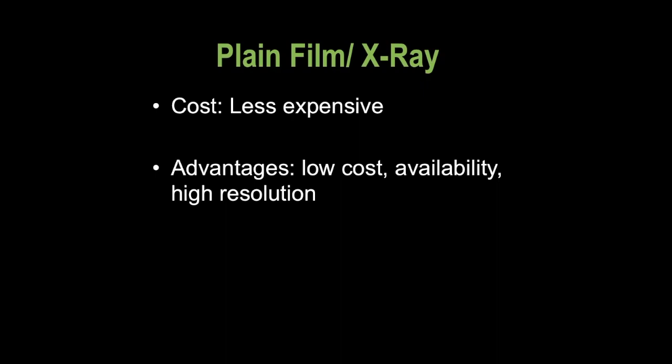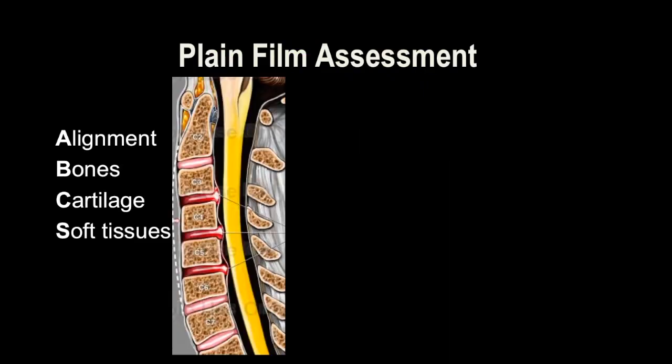Plain films allow a lot of detail even when not very expensive and highly available. The classic plain film assessment uses the ABCs, which stands for Alignment, Bones, Cartilage, and Soft Tissues. For alignment, we draw four main lines around the spine. For bones, we make sure all the bones are intact, and then we assess cartilage and soft tissue through indirect signs.